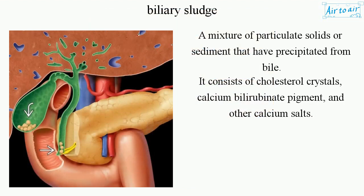Biliary sludge is a mixture of particulate solids or sediment that have precipitated from bile. It consists of cholesterol crystals, calcium bilirubinate pigment, and other calcium salts.